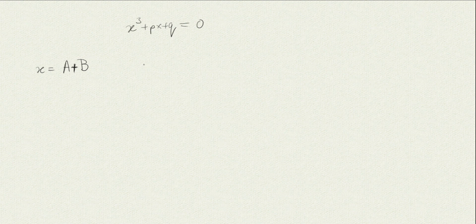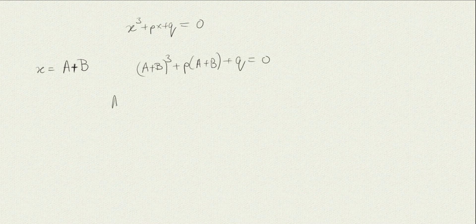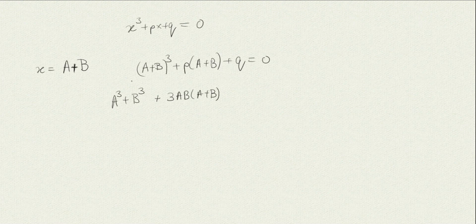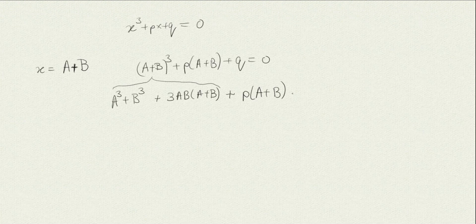If we take x = a + b and plug it in, we get (a + b)³ + p(a + b) + q = 0. Opening the brackets, (a + b)³ = a³ + b³ + 3ab(a + b). So the equation becomes a³ + b³ + 3ab(a + b) + p(a + b) + q = 0, which we can rearrange as (3ab + p)(a + b) + a³ + b³ + q = 0.